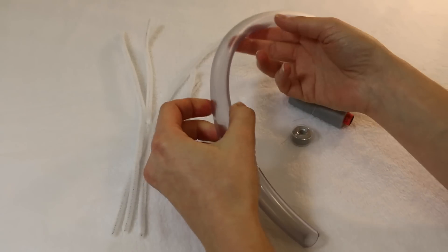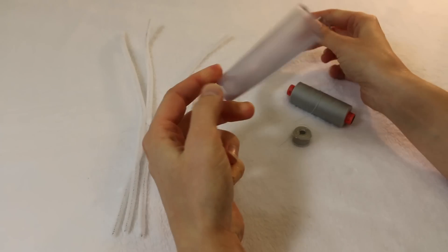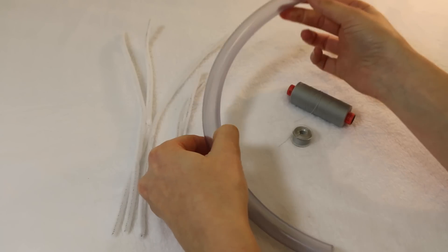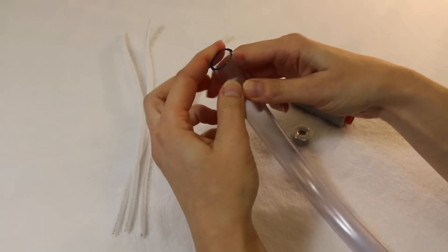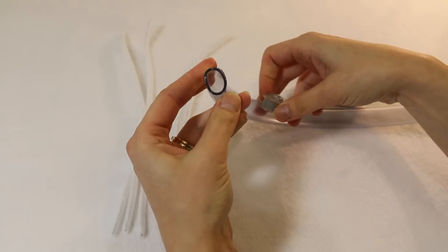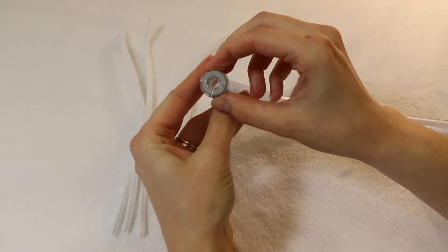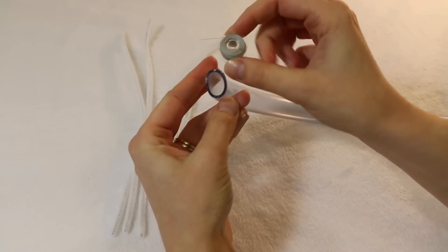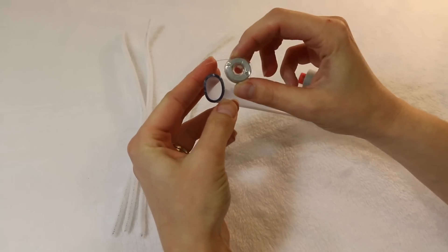And you'll also need some plastic tubing, which I got from the hardware store. You just need to make sure that the diameter is about the same as your bobbin. So I just took the bobbin along to the hardware store to make sure I was getting the right one.